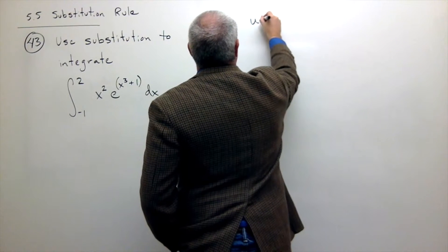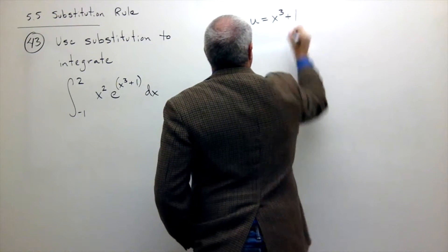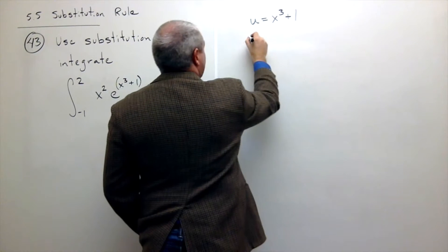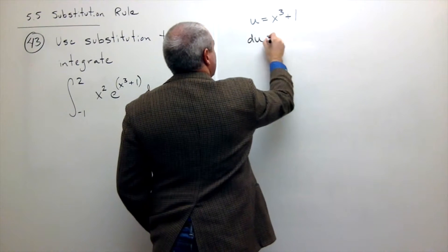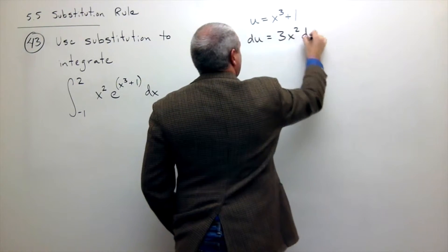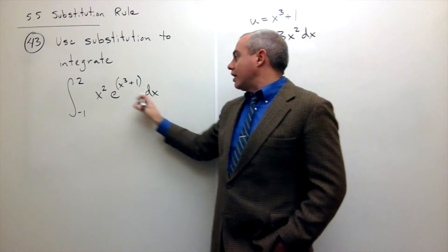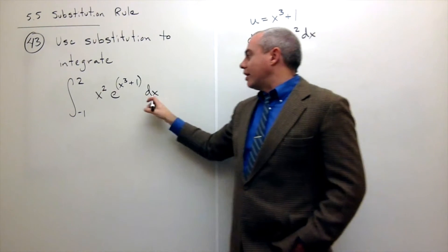So we have u is equal to x cubed plus 1. If that's my u, then du is equal to 3x squared dx. And you'll notice I don't have a 3x squared dx. I have an x squared dx.